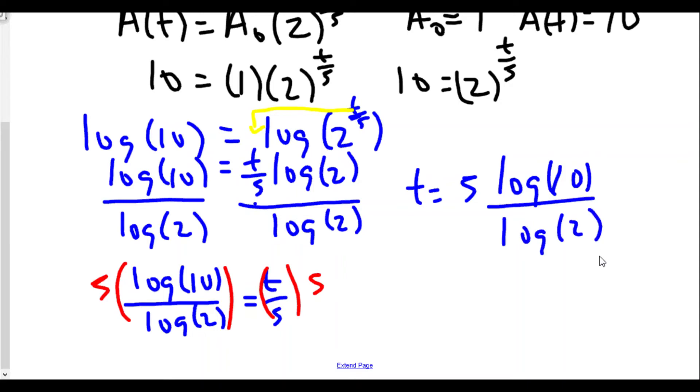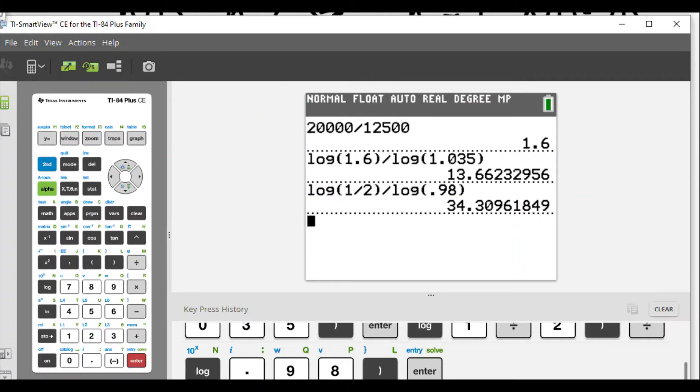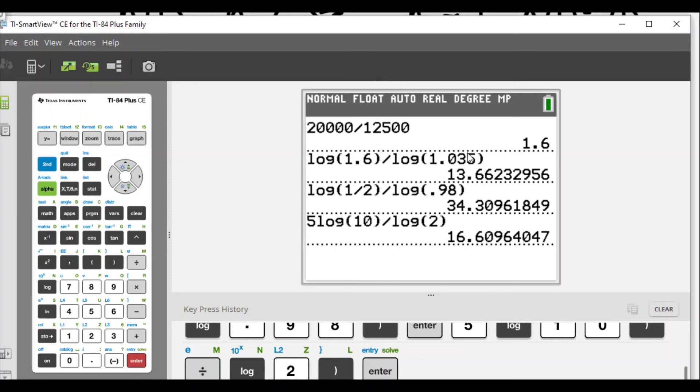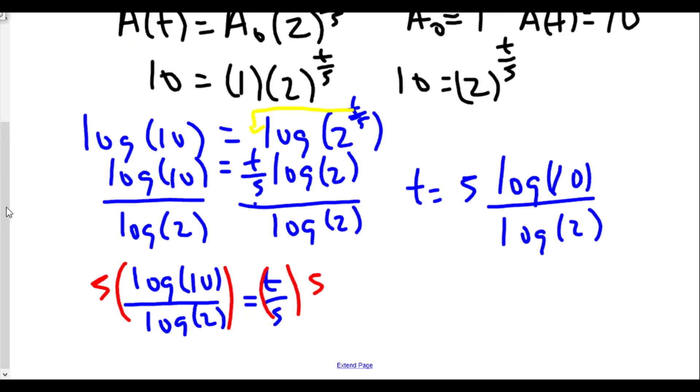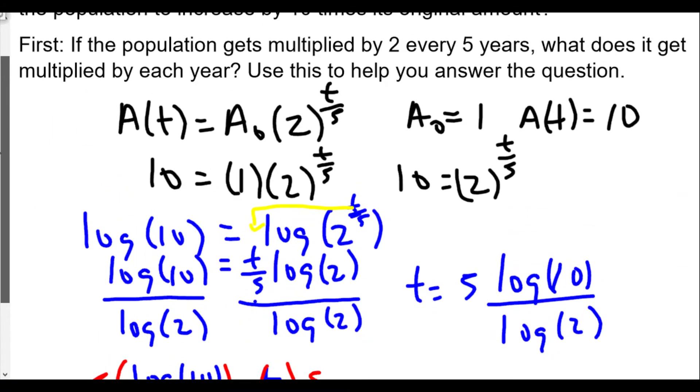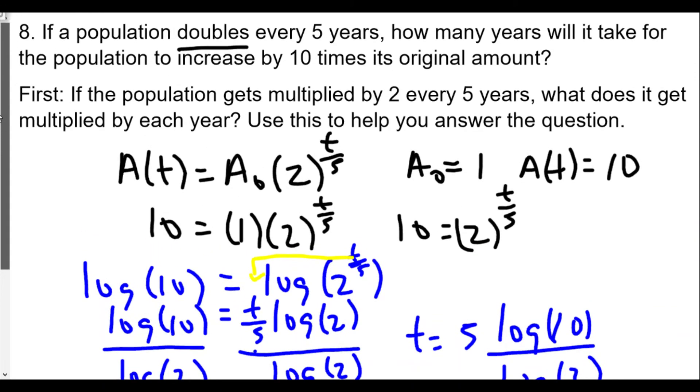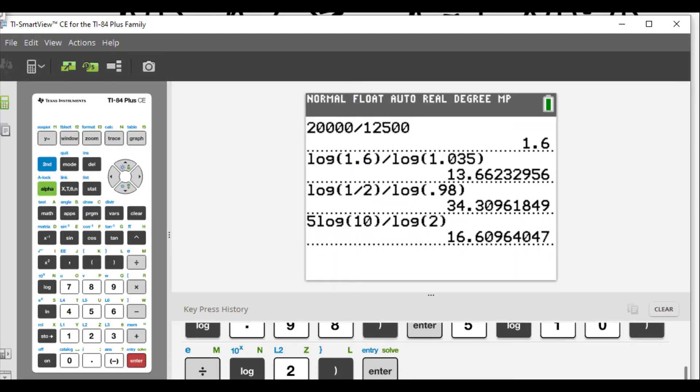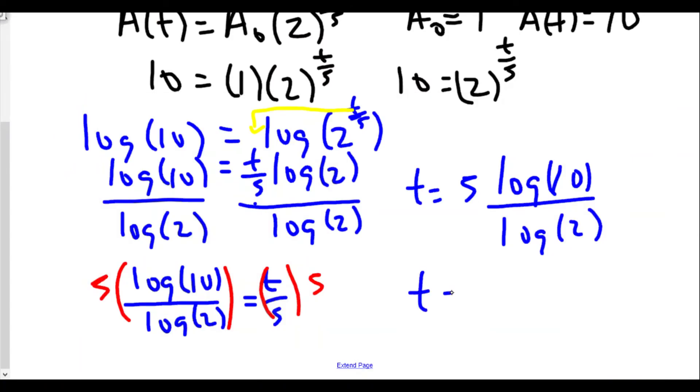So we're going to use our calculator and type in 5 times log 10, close parenthesis, divided by log 2, close parenthesis. And we get 16.6096. Now, it says how many years and we're rounding to the nearest tenth. So t equals 16.6 years. If it was nearest hundredth, I'd go 16.61. If it was nearest year, I'd do 17 years.